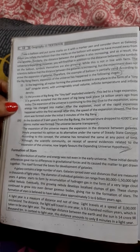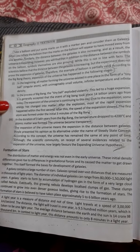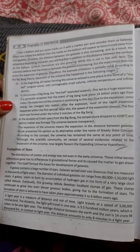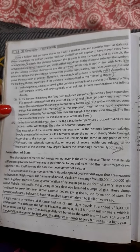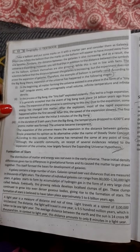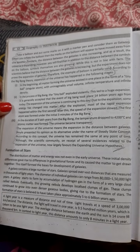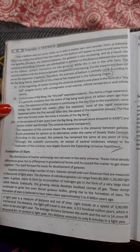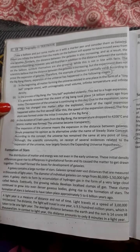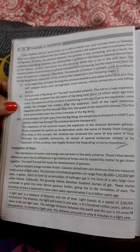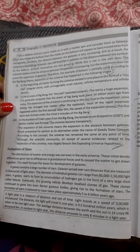A galaxy contains a large number of stars. The stars spread over vast distances that are measured in thousands of light years. The diameter of individual galaxies ranges from 80,000 to 1,500,000 light years.